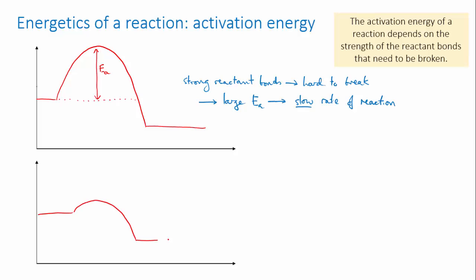Conversely, reactants with weak bonds which fall apart easily may undergo a reaction with a small activation energy. And because the bonds that need to be broken are quite weak, the rate of the reaction will be higher, because it's more likely that the bonds will get broken and the reaction can proceed more quickly.